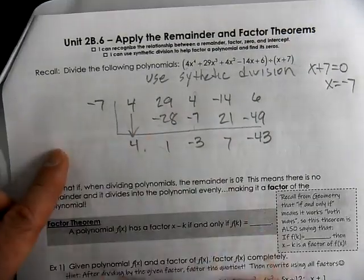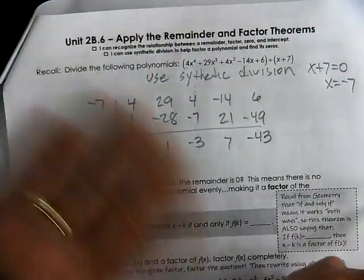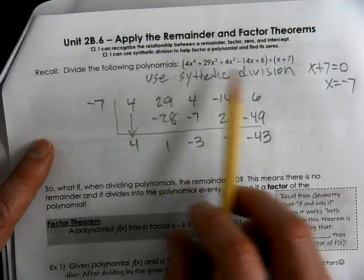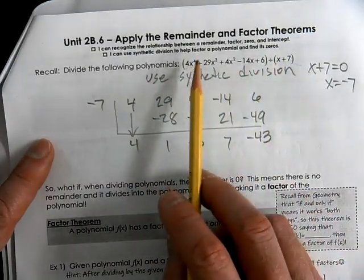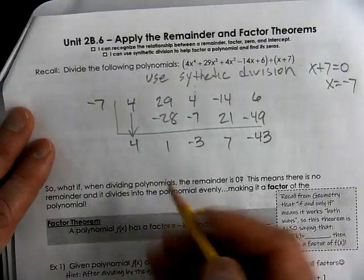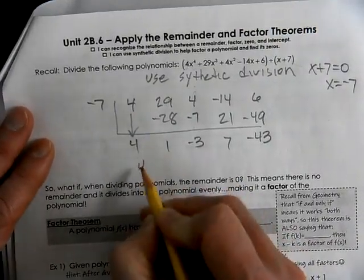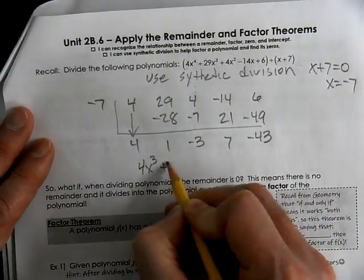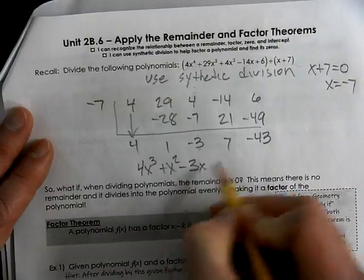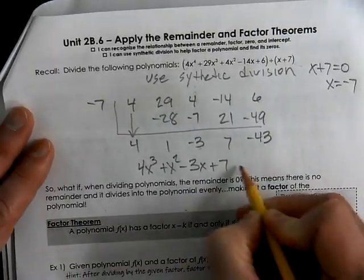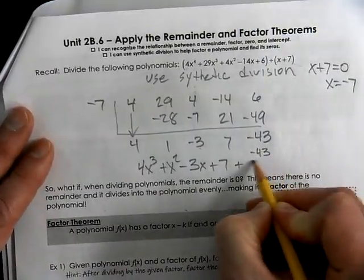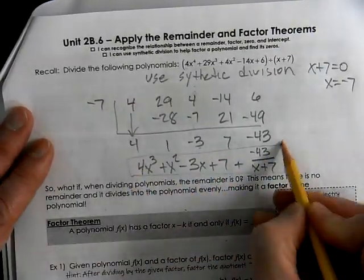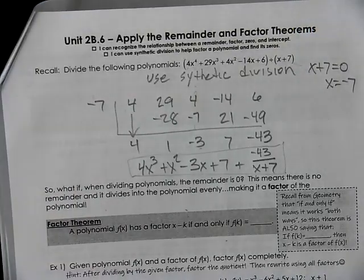So we're doing division. In division we notice that we're starting with x to the fourth, we're dividing by the first power, so now we're going to have x cubed. So this must be the coefficient for x cubed. Then we go in decreasing order: plus x squared minus 3x plus 7, and negative 43 over x plus 7. That's how we use synthetic division.